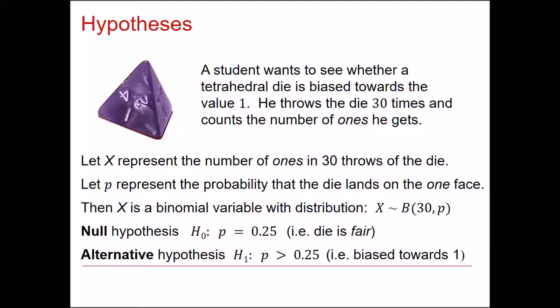So we have a null hypothesis, an initial situation which is that the dice is fair. The probability of getting a one is 0.25. The other option is that the dice is not fair. It's biased towards the one. So therefore the probability of getting a one, the p, would be greater than 0.25.